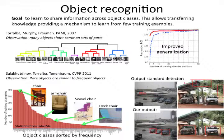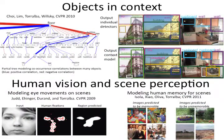One interesting thing when you start working with so many different object classes is that you start having classes that look alike. For instance, if you are interested in detecting deck chairs, it may be really hard to collect data for them, but they look alike all kinds of chairs for which it's much easier to collect data. So we are building systems that can transfer knowledge between different object classes.